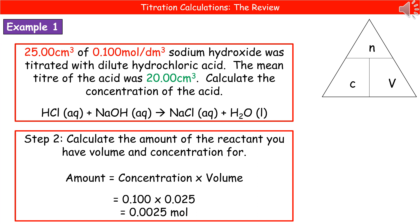Step two is to calculate the amount of the reactant that we've got the volume and the concentration for, which in this case is sodium hydroxide. So we go back to our formula: the amount is the concentration times the volume. That is 0.1 times 0.025, which gives us 0.0025 moles.